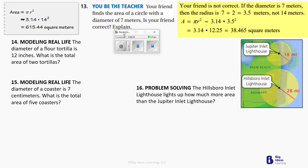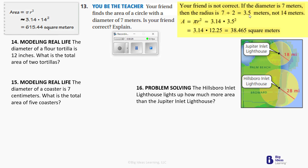So I'm going to go with no — not correct — because they should have divided 7 by 2, and that would have given 3.5. So the radius is 3.5, not 14. 3.14 times 3.5 squared would have been 3.14 times 12.25, which would have given us 38.465 square meters.